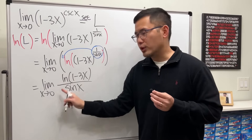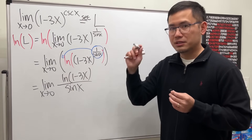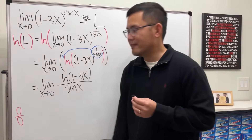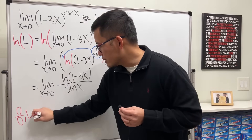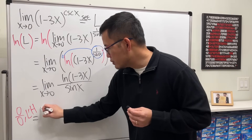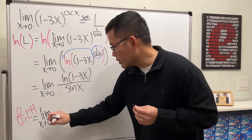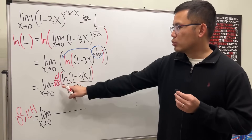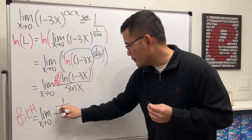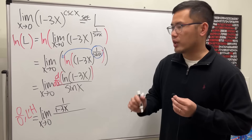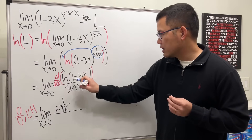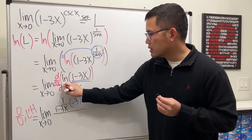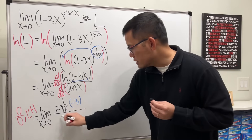Let's check: if we plug in zero, the numerator gives ln(1 minus 0) = ln(1) = 0, and the denominator gives sine(0) = 0. We get 0/0, so we get to use L'Hôpital's rule. By L'Hôpital's rule, take the derivative of the top: the derivative of ln(1 minus 3x) is 1 over (1 minus 3x), and by the chain rule we multiply by the derivative of the inside, which gives negative 3. The derivative of the bottom, sine x, is cosine x.